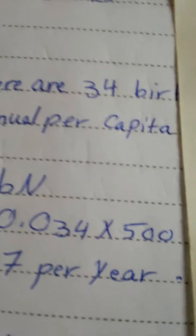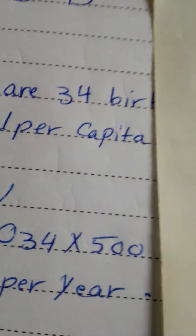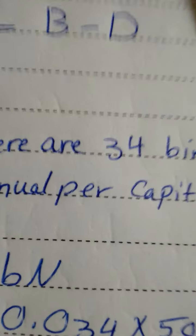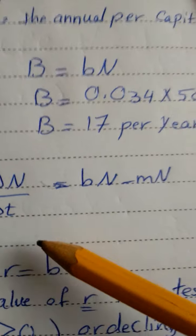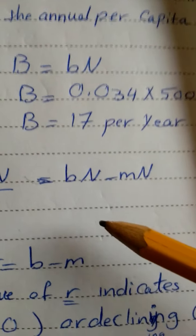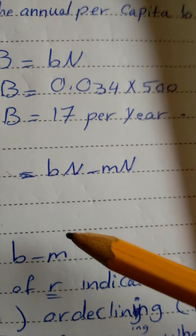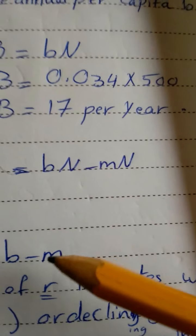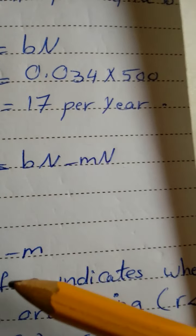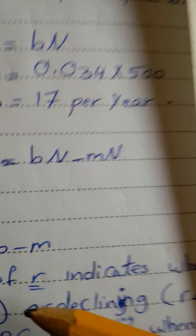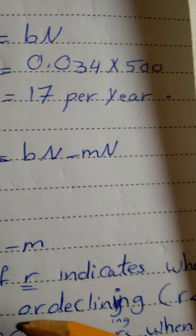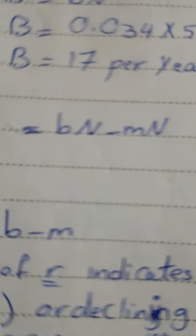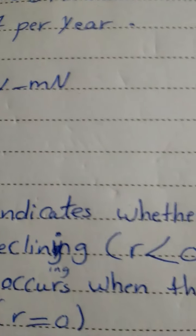We can revise the population growth equation using per capita birth and death rates rather than the numbers of births and deaths: delta N / delta T = bN minus mN. Population ecologists are most interested in the difference between the per capita birth rate and per capita death rate. This difference is the per capita rate of increase, or R: R = b minus m. The value of R indicates whether a given population is growing (R > 0) or declining (R < 0).